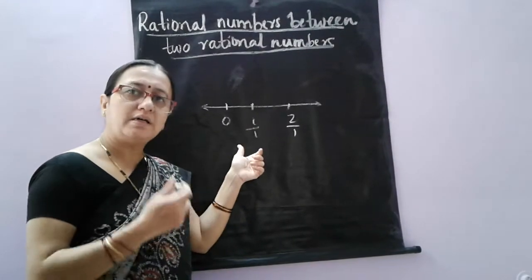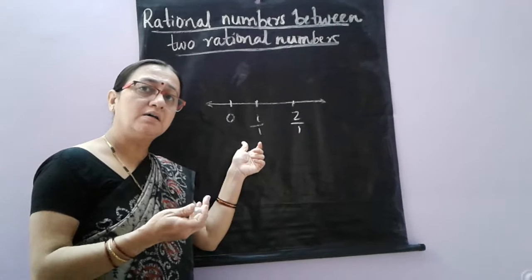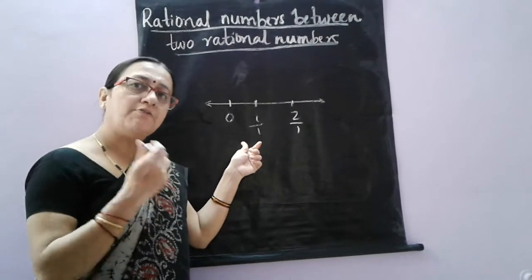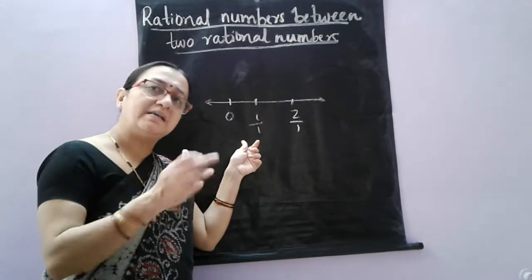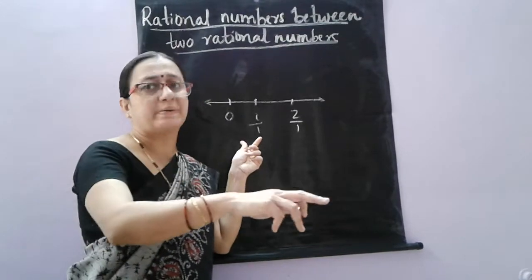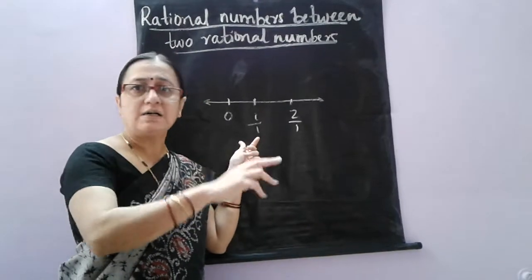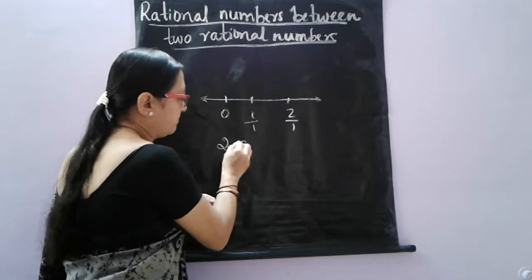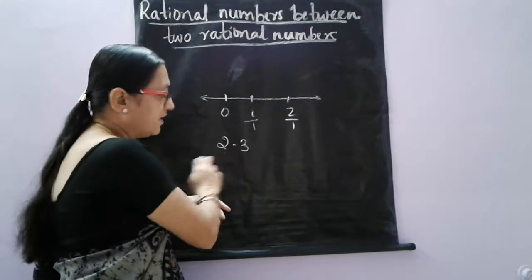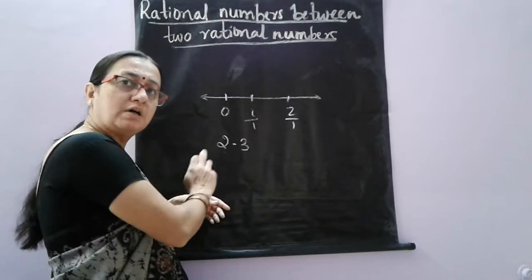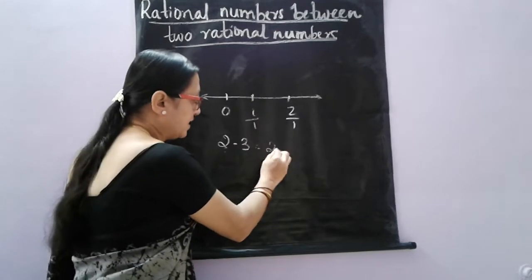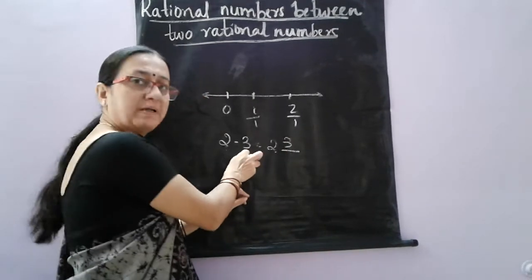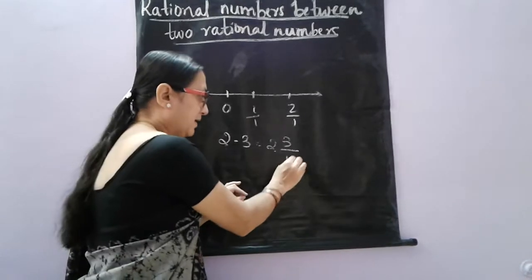A fraction is another way of representing a decimal. A fraction can be represented as a decimal, and a decimal can also be represented as a fraction. So if I say 2.3, we can convert it into a fraction: 2 integer 3 divided by 10, since there is only 1 decimal place.